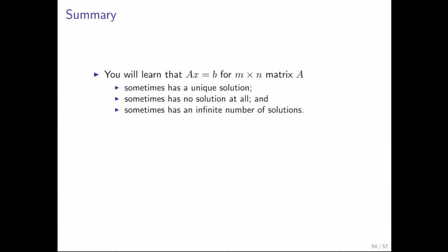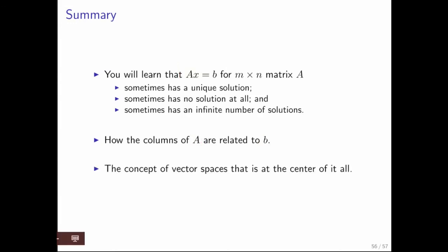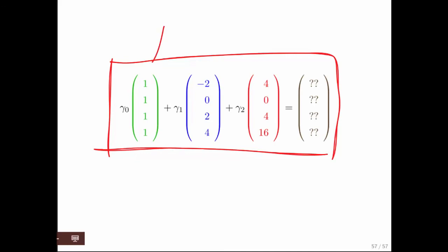What you will learn this week and next week is that sometimes Ax equals b has a unique solution — we've seen many examples of that. Sometimes it has no solution — we just saw an example. And sometimes it has an infinite number of solutions. The question of when Ax equals b has a unique solution, no solution, or infinitely many solutions is closely related to how the columns of A relate to the right-hand side b. In order to discuss this, we need to introduce the concept of vector spaces.